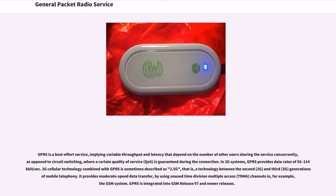GPRS is a best-effort service, implying variable throughput and latency that depend on the number of other users sharing the service concurrently, as opposed to circuit switching, where a certain quality of service is guaranteed during the connection. In 2G systems, GPRS provides data rates of 56 to 114 kilobits per second.